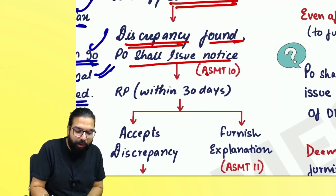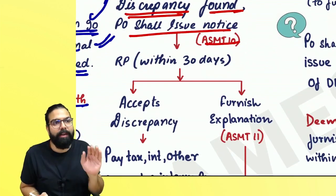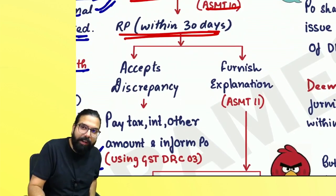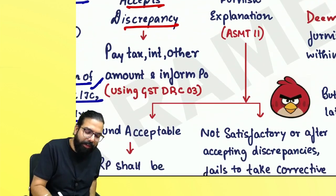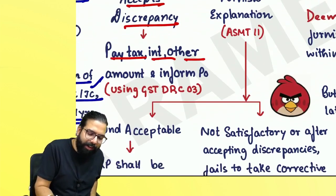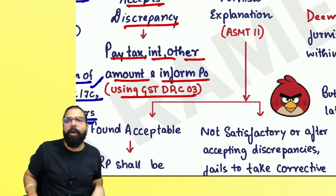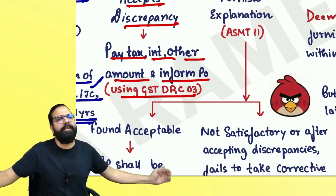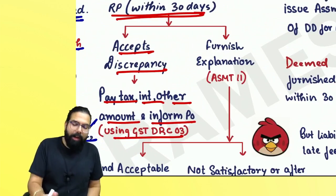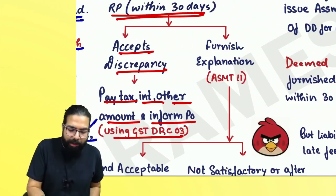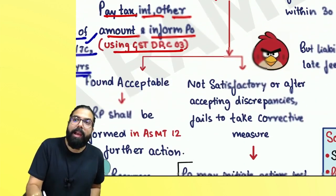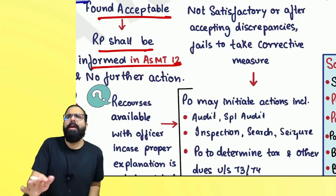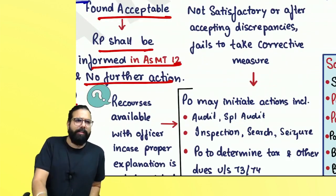The notice in ASMT-10 tells the registered person that within 30 days they must accept the discrepancy, pay their tax, interest, and any other amount, and inform the proper officer. You will make the payment and inform the proper officer using form GST DRC-03. If you don't accept, you can give an explanation in ASMT-11. If he likes your explanation, he will inform you in ASMT-12 and will not take any action.